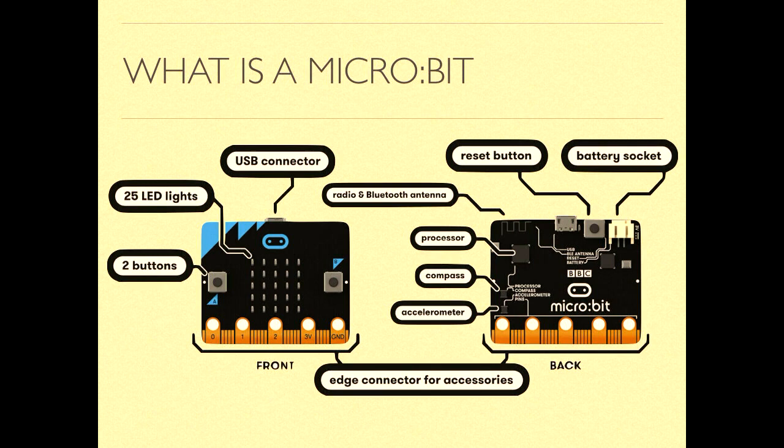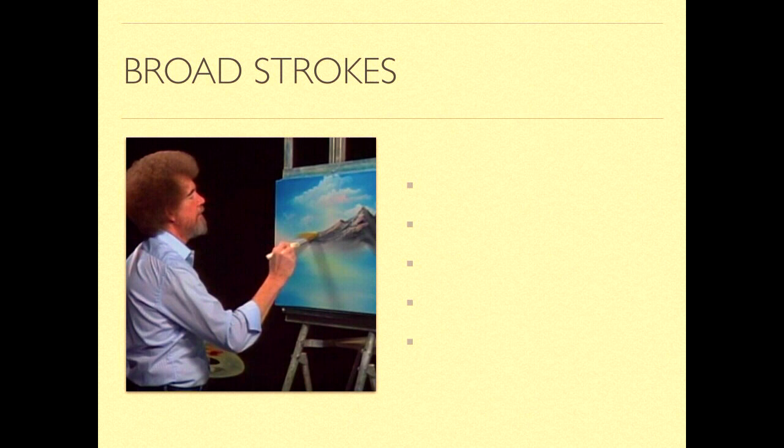Here's a quick little overview of what's on a micro:bit. It's got a lot of stuff packed into a really small package. We've got a lot of LEDs on the front, we've got two buttons, it's got a compass and an accelerometer, it's got Bluetooth and radio, and it's got this edge connector for connecting all sorts of accessories which I'll come to later.